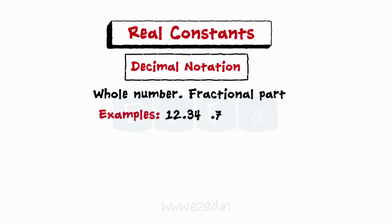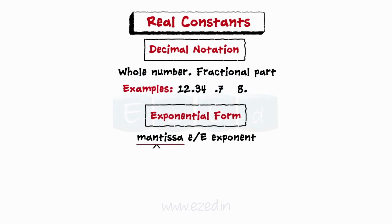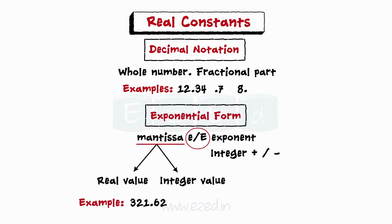Have a look at the examples. Real numbers can also be expressed as an exponential value. They are represented this way. Mantissa is either a real or integer value. E stands for exponential representation. An exponent is an integer value with either a plus or minus sign. Considering this example, here, e raised to 2 means multiply by 10 raised to 2.